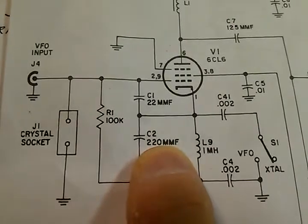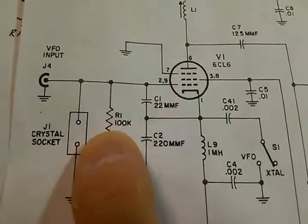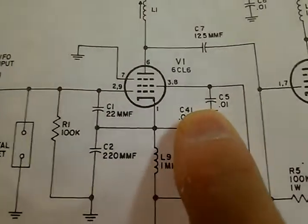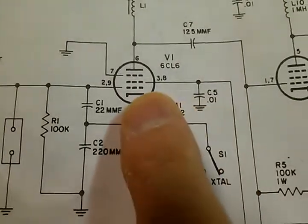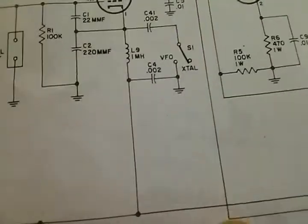The 220 picofarads and 22 picofarads over here, this stuff's all critical. The 100k, this is also critical over here—the bypass resistor for grid number two.